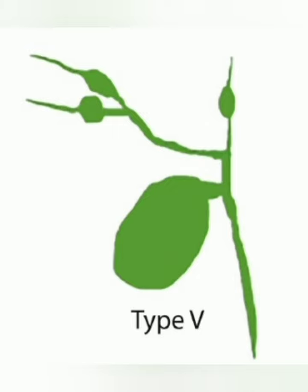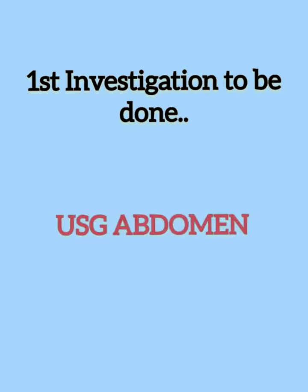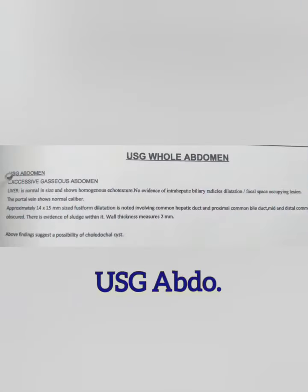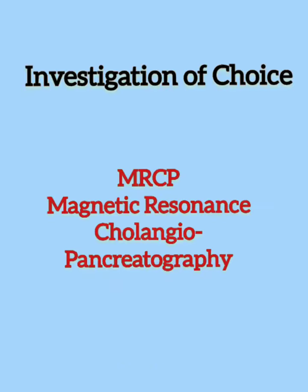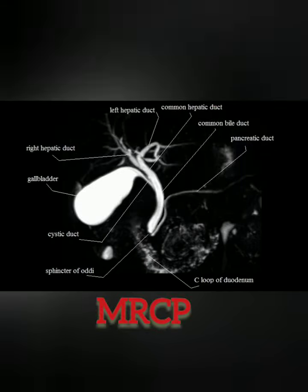In type 5, only intra-hepatic dilatation of the biliary tree can be seen. The first investigation to be done in case of Choledocal Cyst is USG abdomen. The investigation of choice for Choledocal Cyst is MRCP — magnetic resonance cholangiopancreatography.